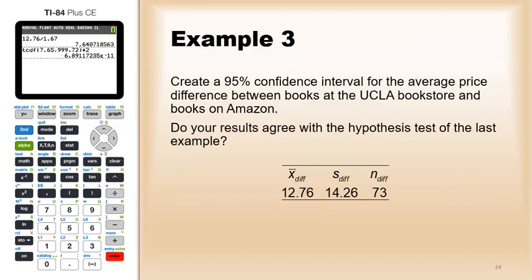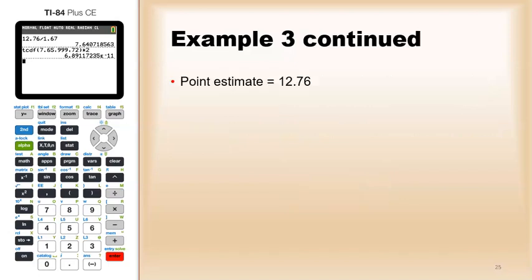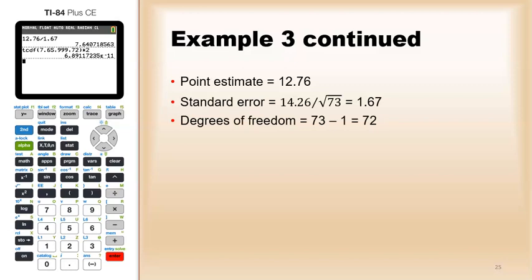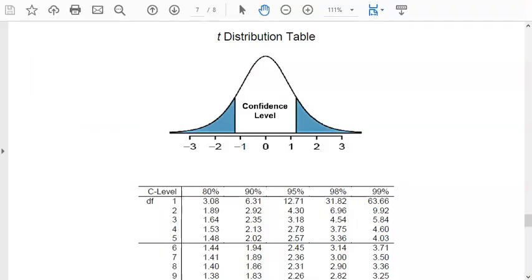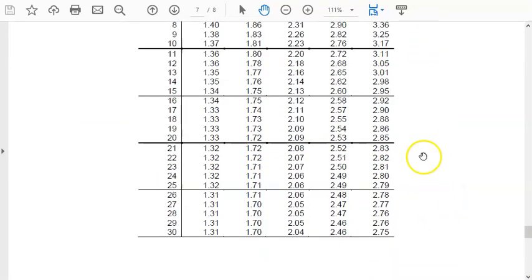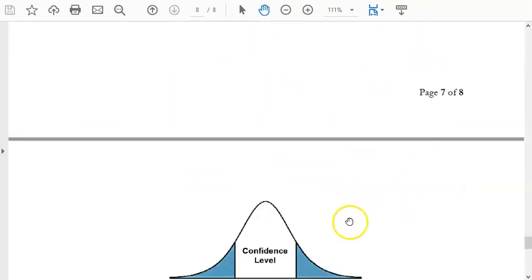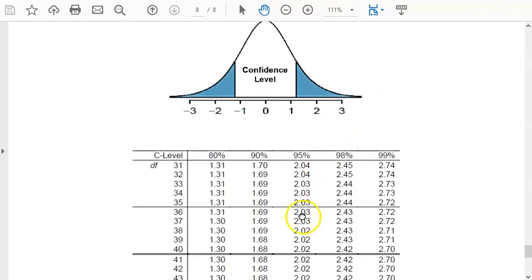Now, if I want to do a 95% confidence interval for the average price, let's see. Point estimate would be 12.76, and again, the standard error is 1.67. Degrees of freedom was 72. So, if I want to do a 95% confidence interval, I would pull up my T distribution table. So, you're following 95, page 8, okay.